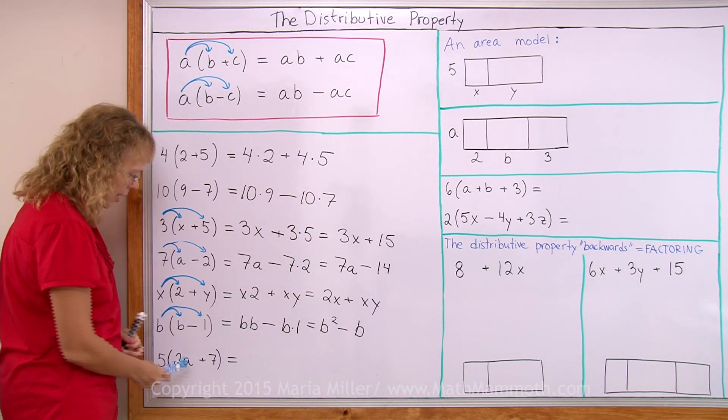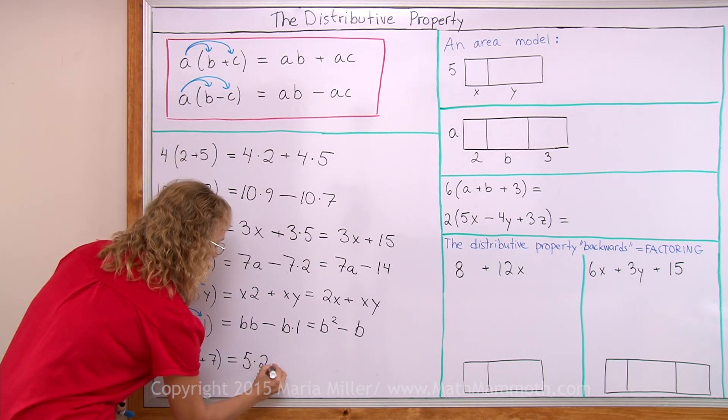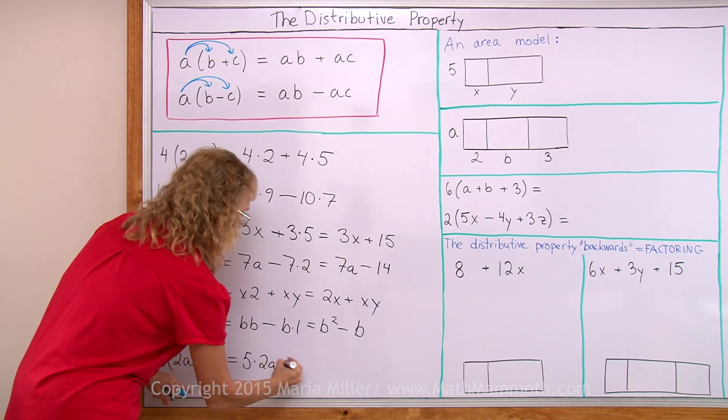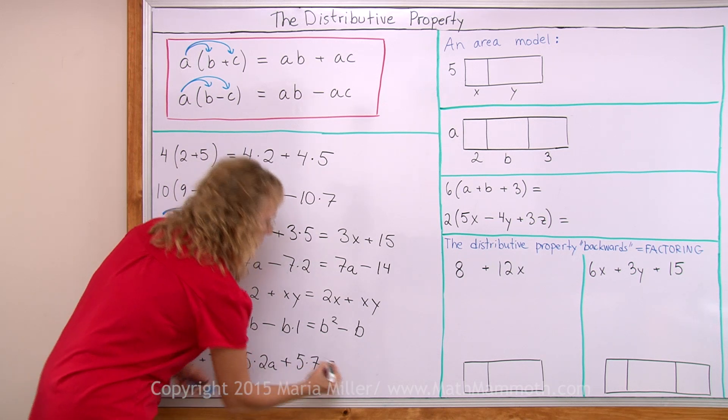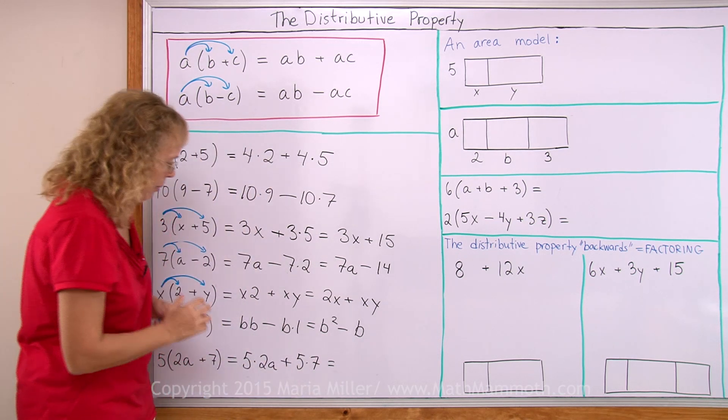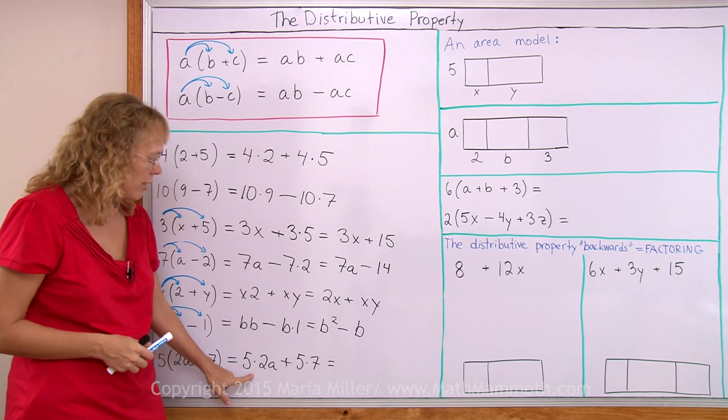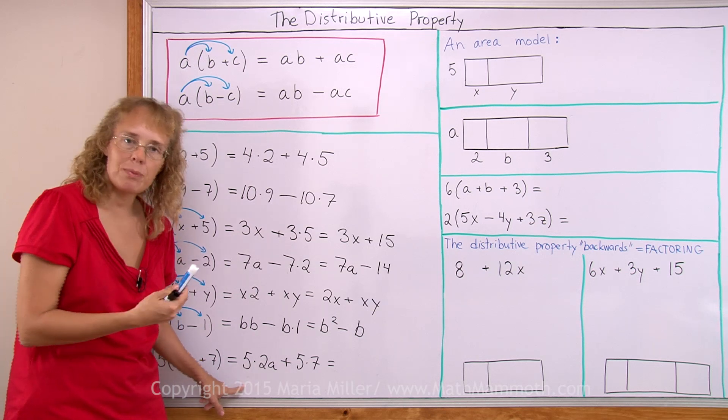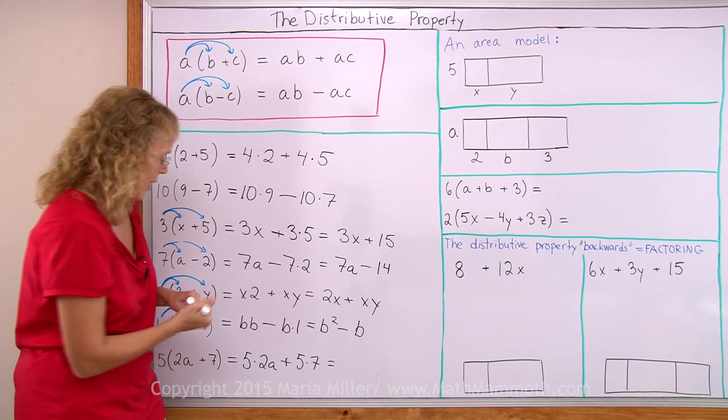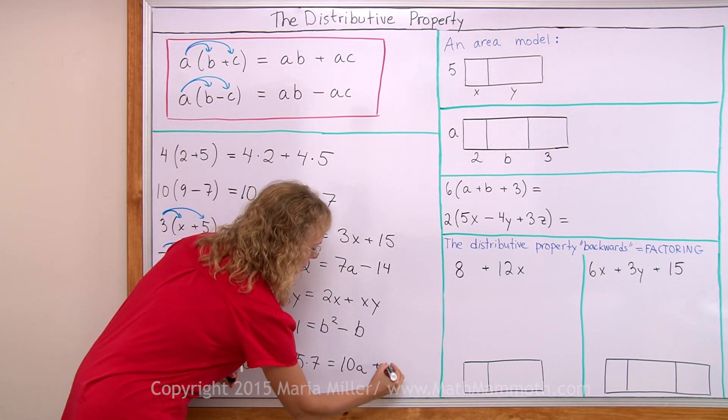Lastly here we have 5 times 2a plus 5 times 7. Again we can simplify a little bit. We can calculate 5 times 7 - 35. And here is 5 times 2 times a. I can multiply 5 times 2, that is 10, and so we get actually 10a. 10a plus 35.